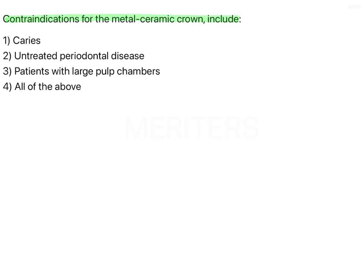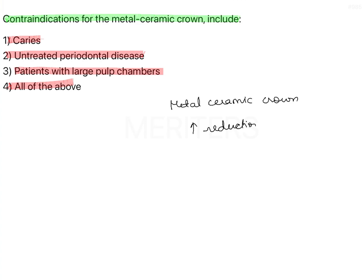Contraindications for metal ceramic crown include caries, untreated periodontal disease, patients with large pulp chambers, and all of the above. When talking of metal ceramic crowns, they require more reduction than metal, they are more aesthetic than metal, and their indications are very specific.